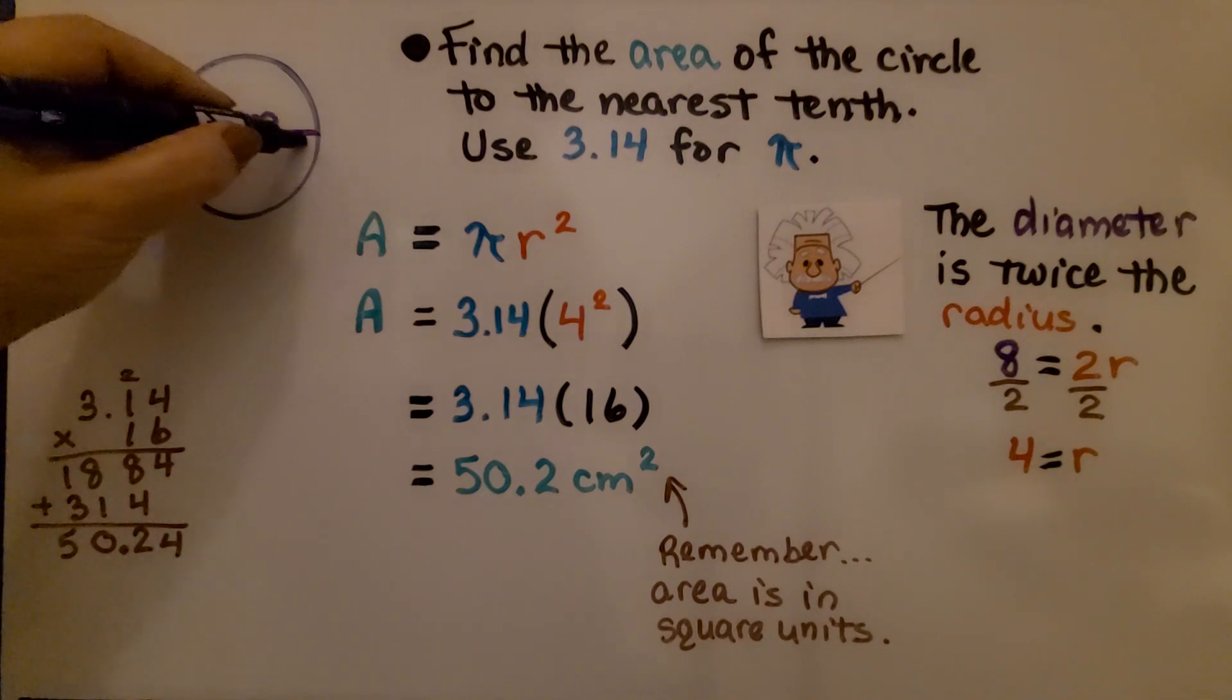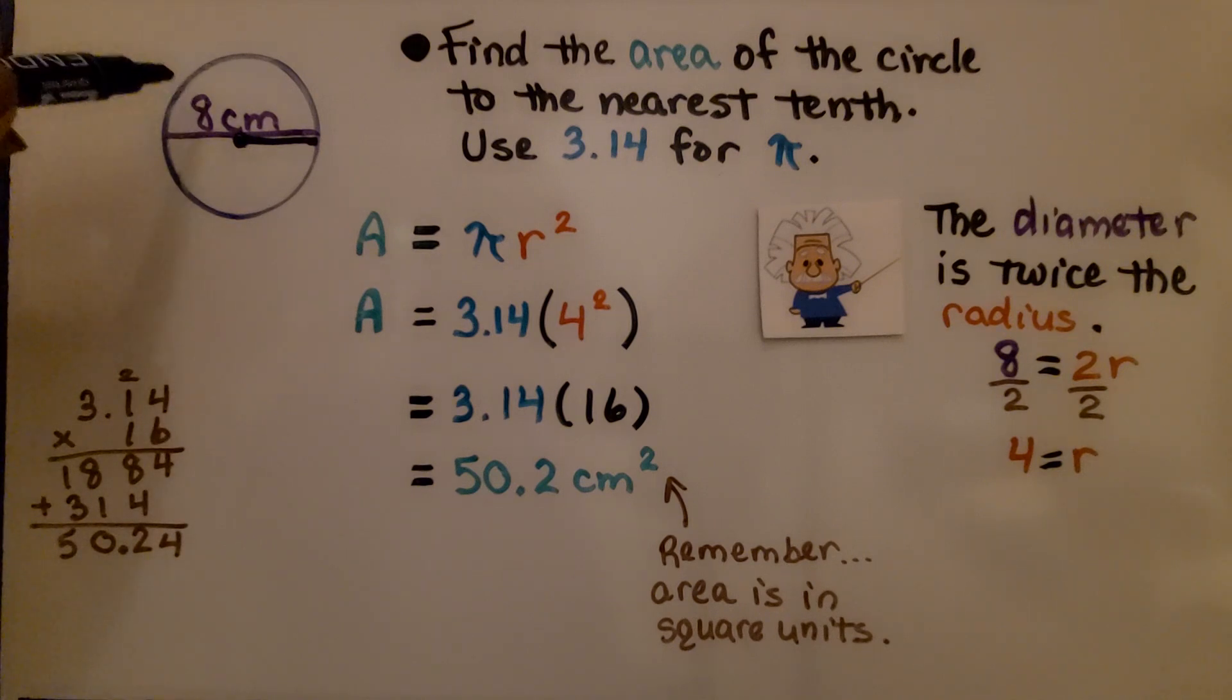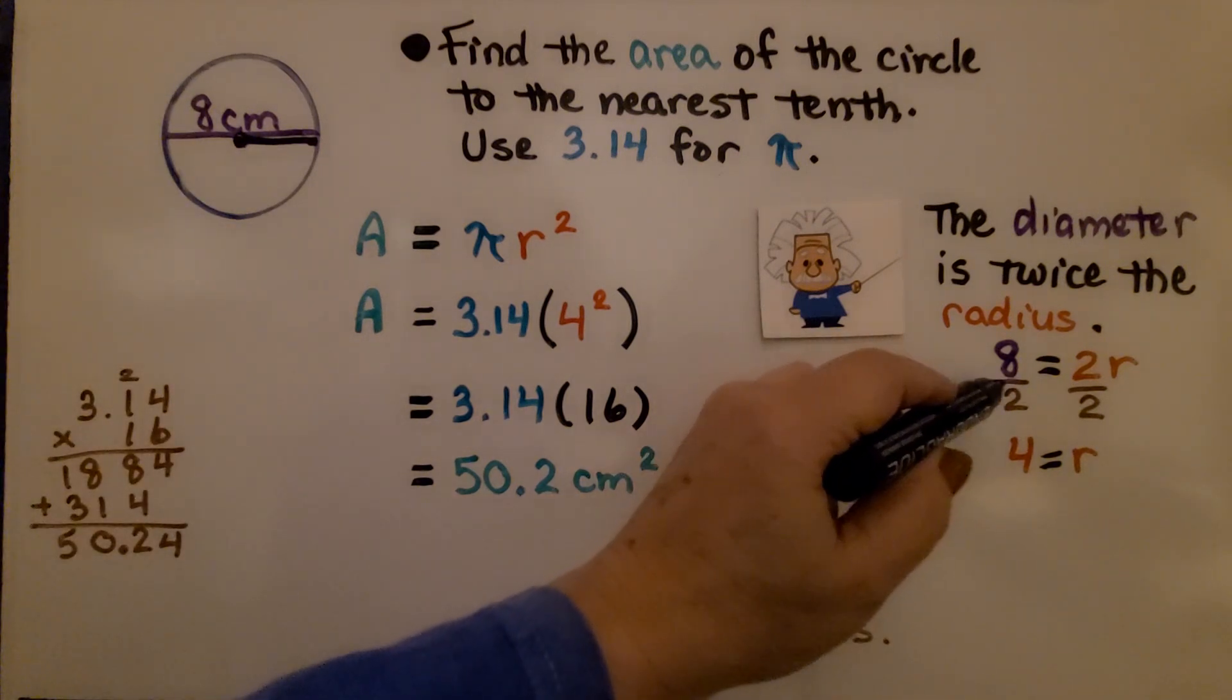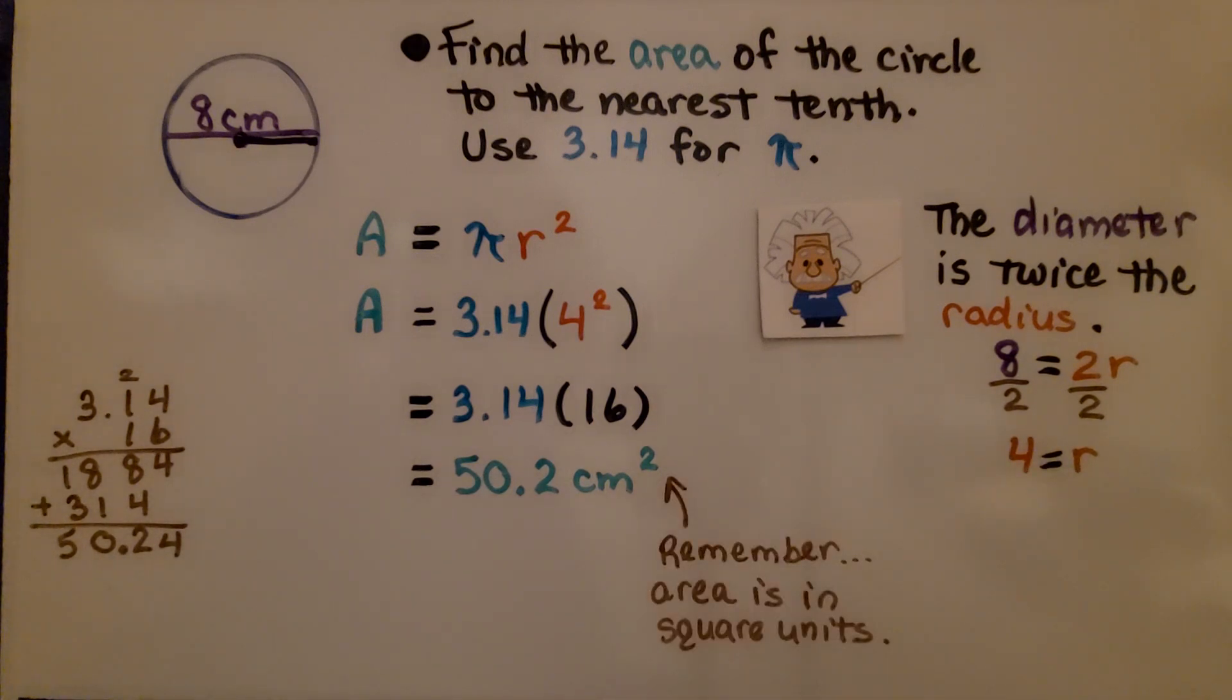This would be the radius, wouldn't it? It would be half of this. So we know if we divide eight by two, it would be four centimeters for the radius. And we can substitute that into the formula.